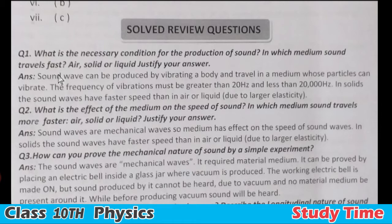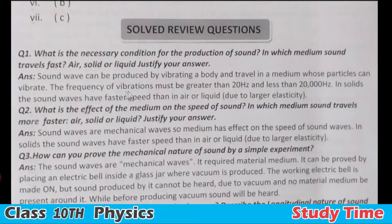Review question number one: What are the necessary conditions for the production of sound? And in which medium does sound travel fastest — air, solid, or liquid? Justify your answer. Sound waves can be produced by a vibrating body and travel through a medium whose particles can vibrate. The vibrations travel through the medium and sound propagates forward.